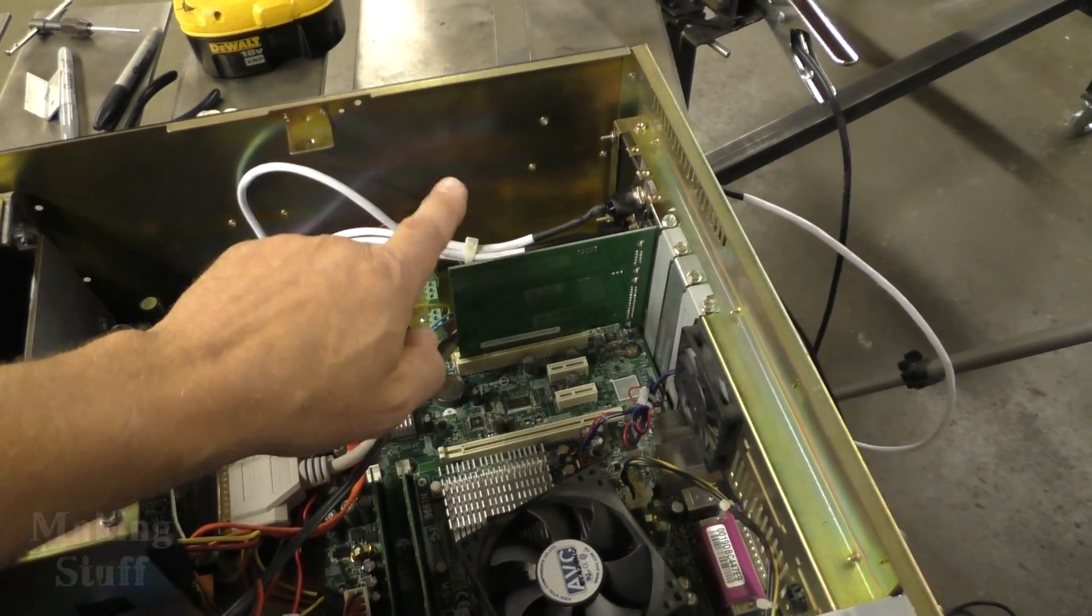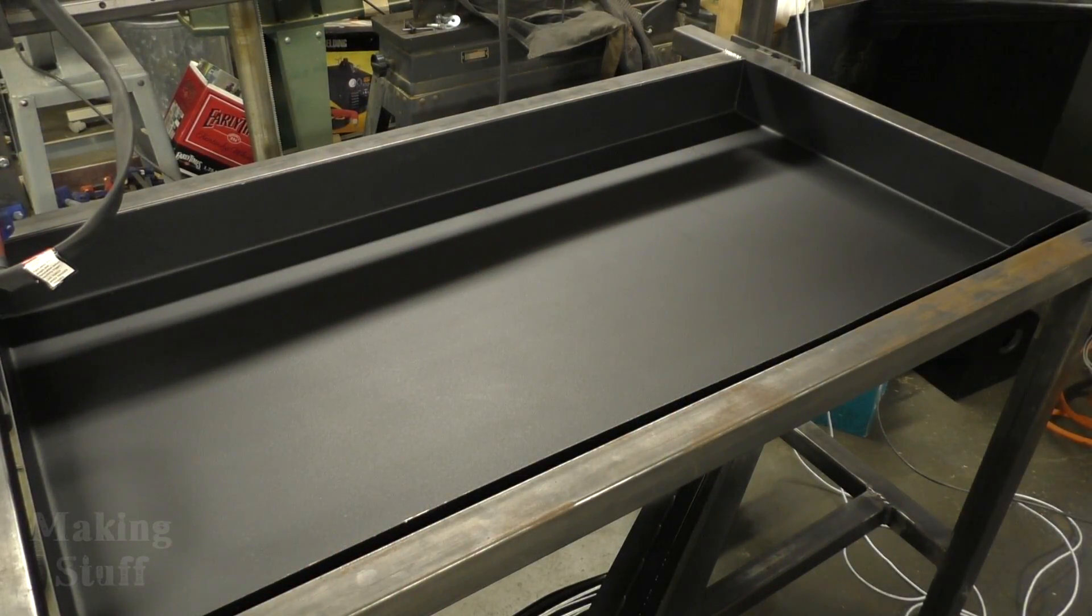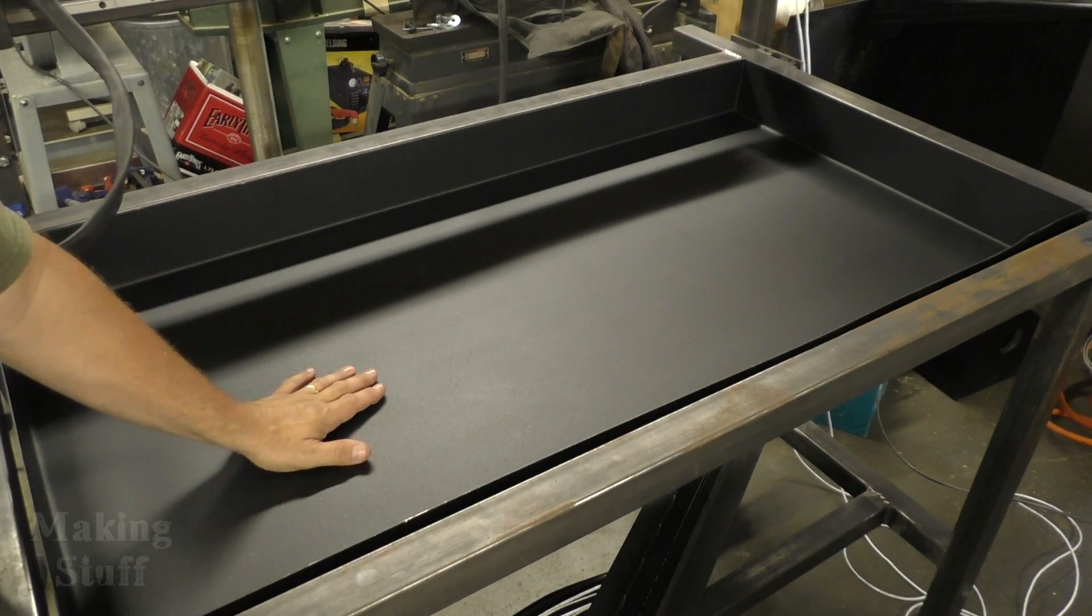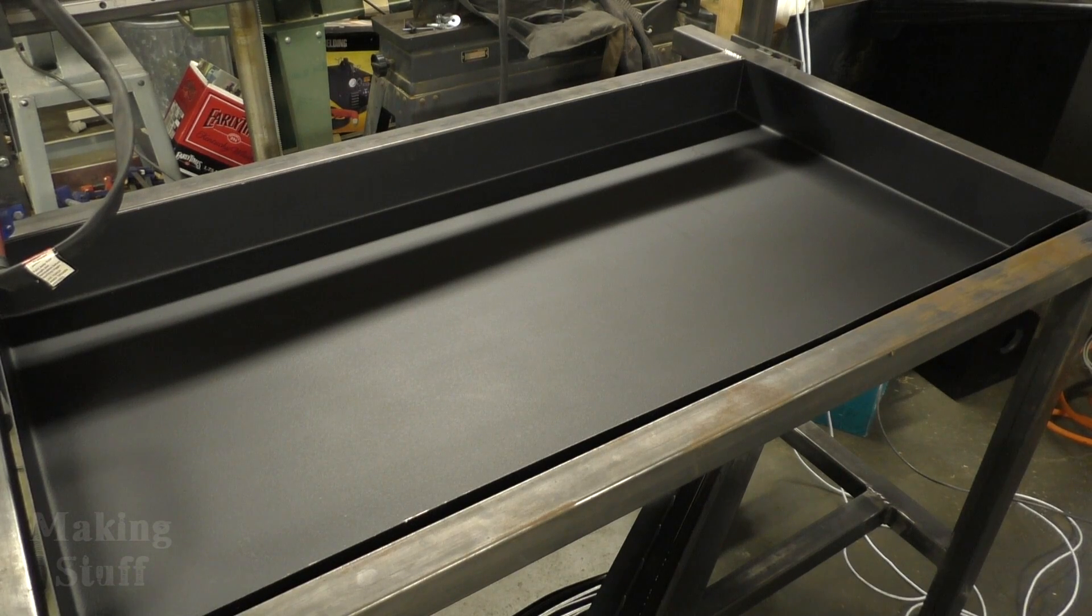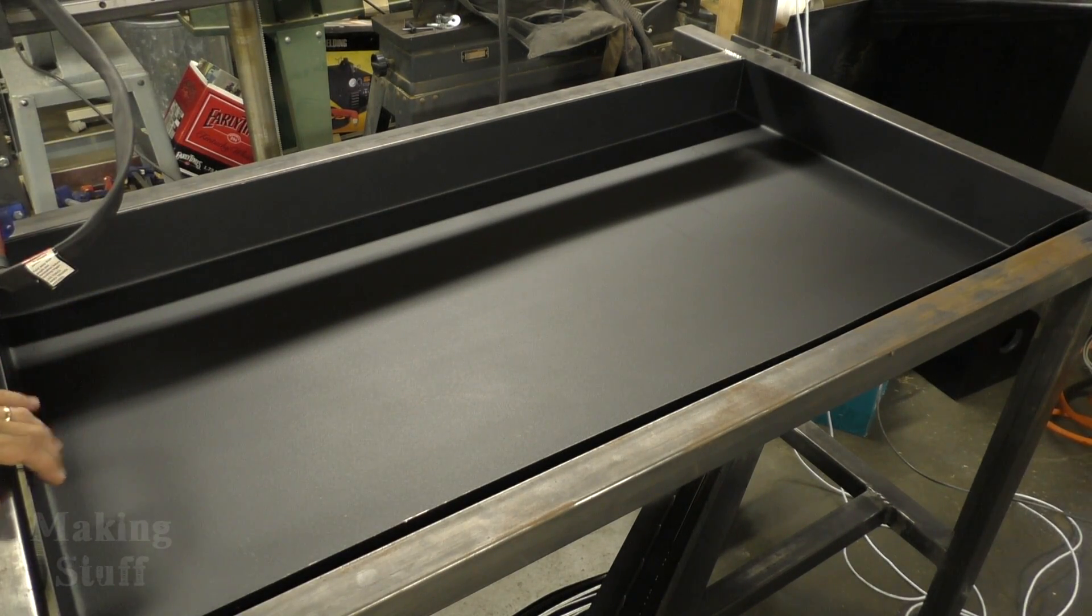I had that entire can of liquid rubber - the Flex Seal stuff - and I just decided to go ahead and spray it all in the pan here because I don't have any other use for it. Hopefully that will help the pan last a little longer and keep it from rusting out.